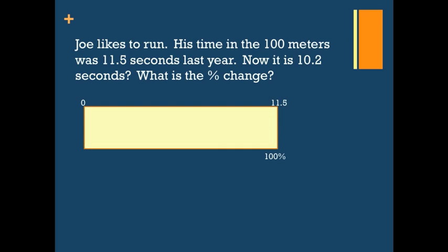Again, we'll do our fraction bar. Notice here we have the original amount. He runs the race in 11.5 seconds, so that's 100%. His new amount is 10.2, so that's actually getting less. So we're going to take that away. So now it's 10.2 over x. So we have our two amounts. 11.5 is 100%, 10.2 is the new percentage.